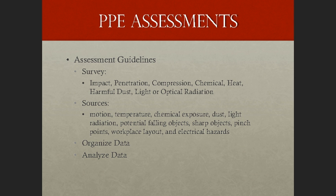Then we're going to evaluate the work area for sources. According to OSHA, sources include things like motion, temperature, chemical exposure, dust, light, radiation, potential overhead fallen objects, sharp objects, pinch points, workplace layout or design — such as ergonomics issues — and finally, electrical hazards. Then we're going to organize the data that we collect. Any information we collect we have to make meaningful, so we first organize it and then analyze the data to see if there are any themes or anything that becomes very obvious.